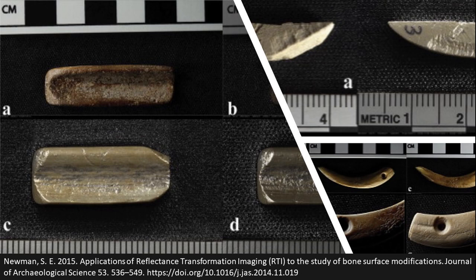In this case, RTI was used to study bone surface modifications, including cut marks, striations, etching and polishing. Such surface modifications contribute to our understanding of object biographies, pointing to anthropogenic and natural formation processes and meanings.